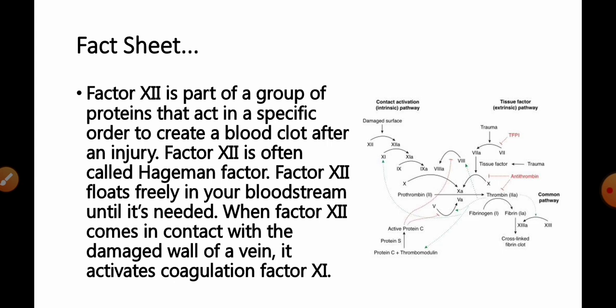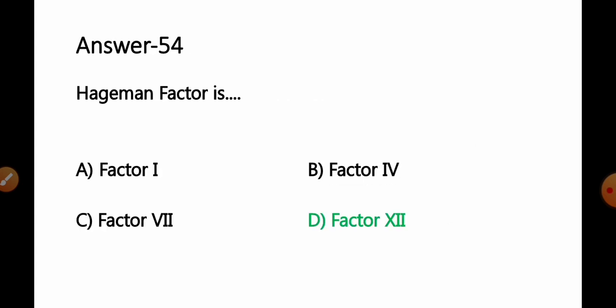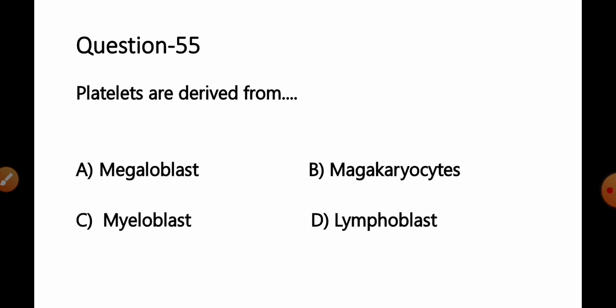Factor 12 floats freely in your bloodstream until it's needed. When Factor 12 comes in contact with a damaged wall of a vein, it activates coagulation Factor 11, and so on until it forms a clot. So option D, Factor 12, is the correct answer for this question.